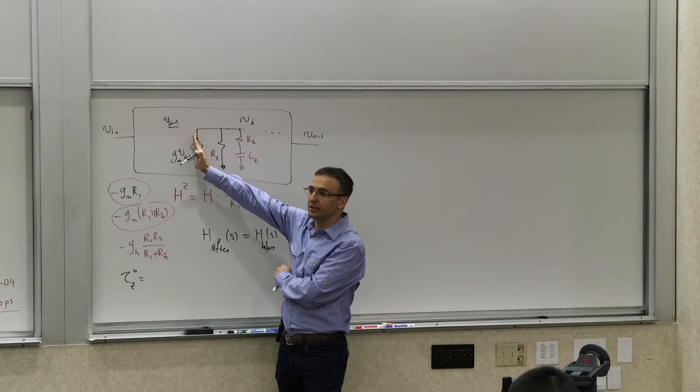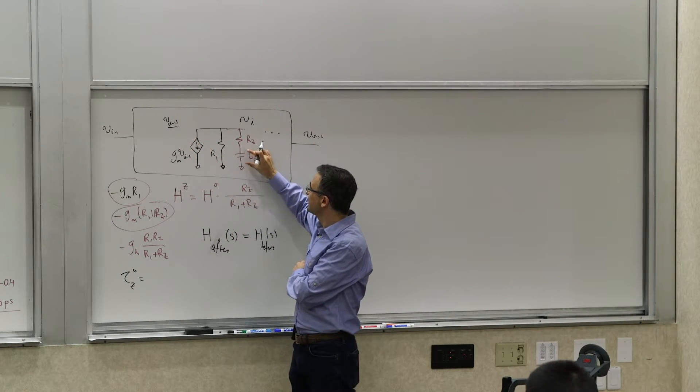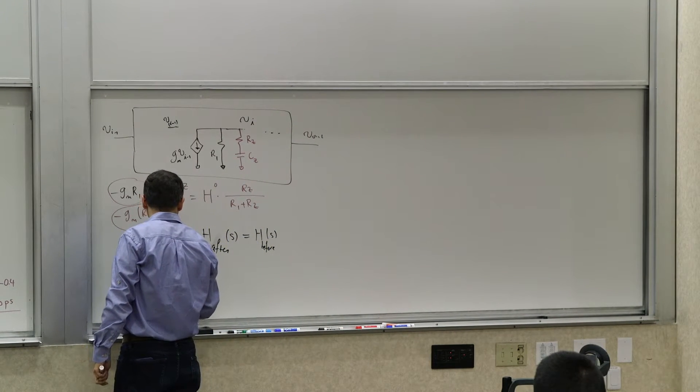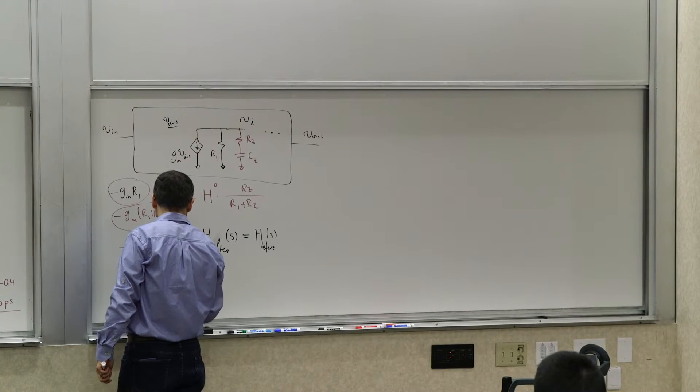Zero? You know all the independent sources, this current source disappears. What is the resistance seen by Cz? R1 plus Rz, right? So it's R1 plus Rz times Cz.